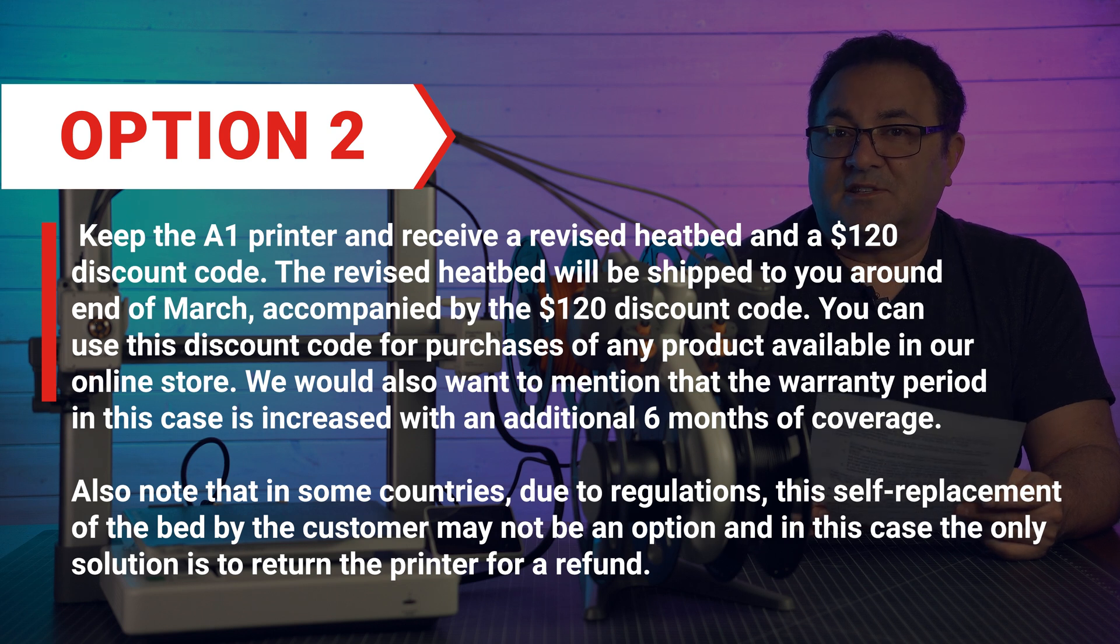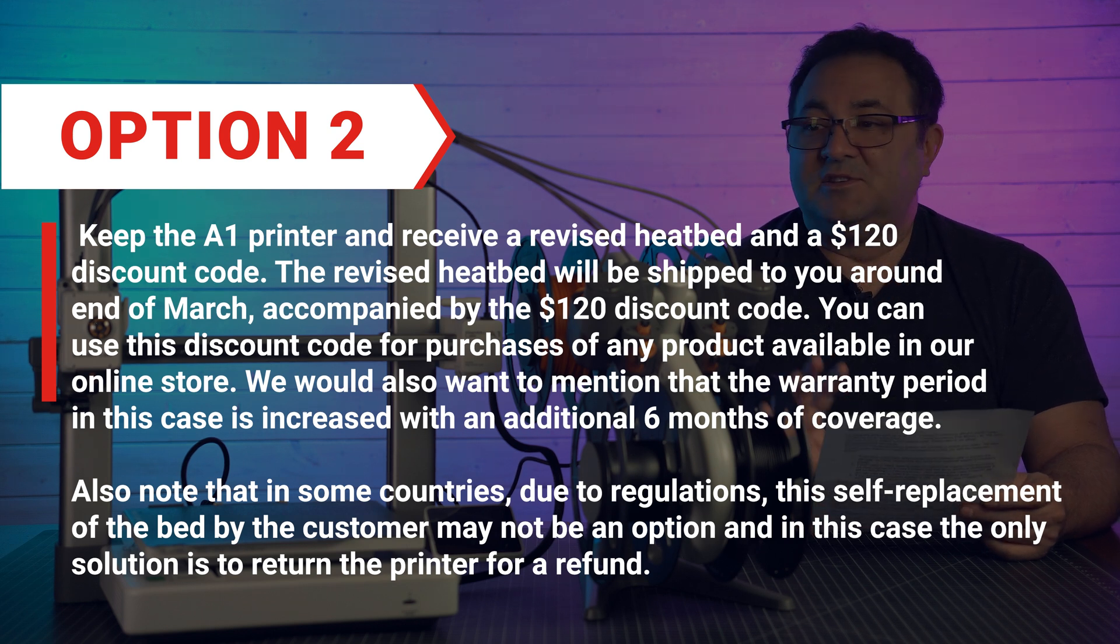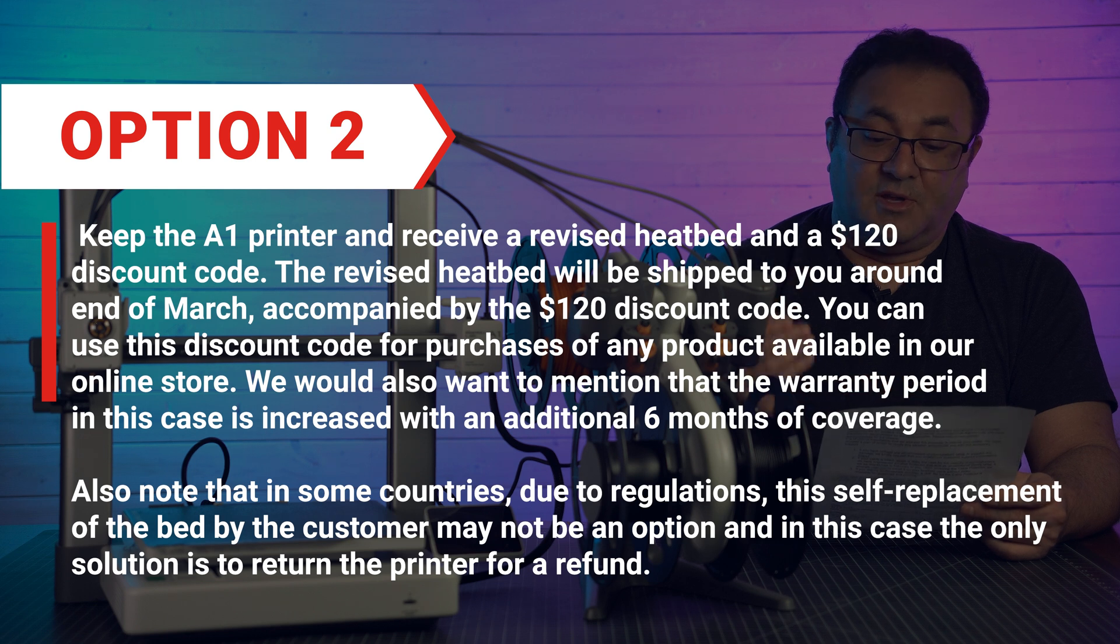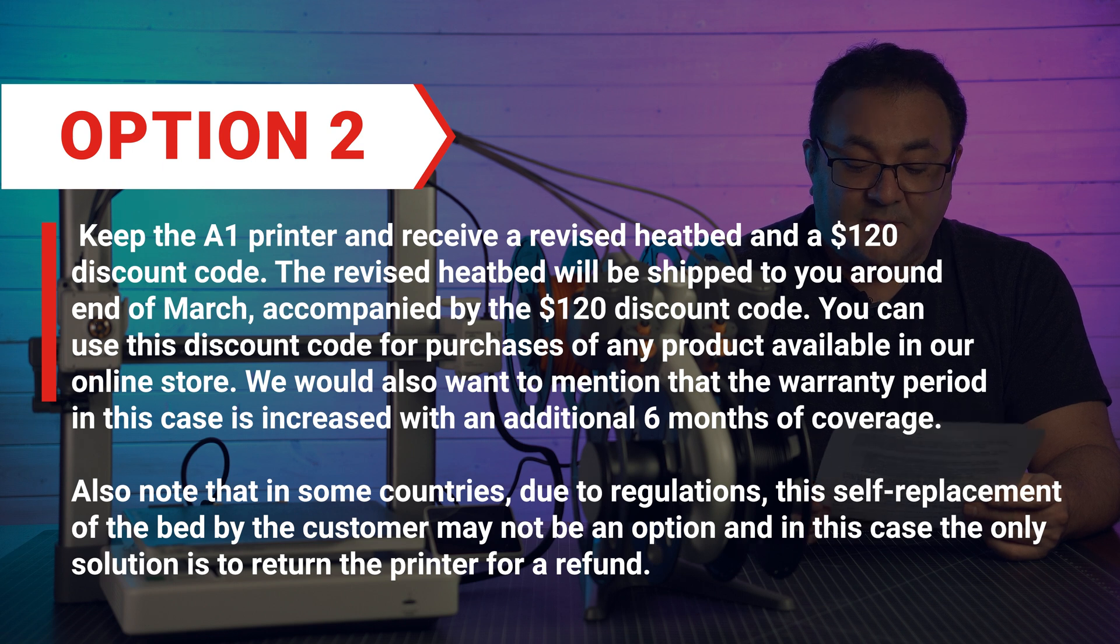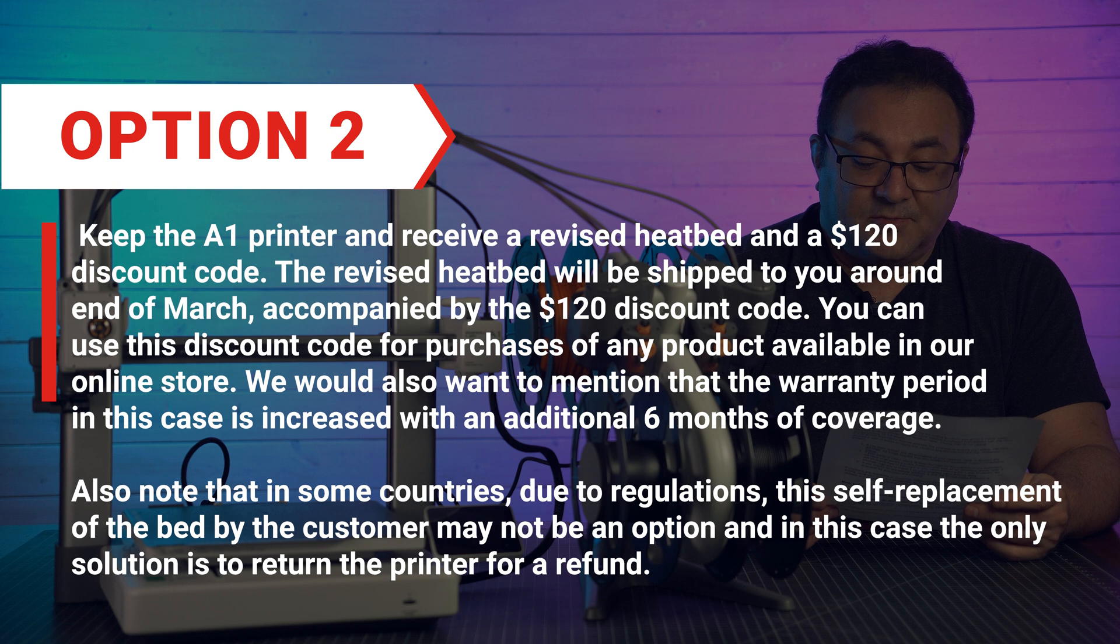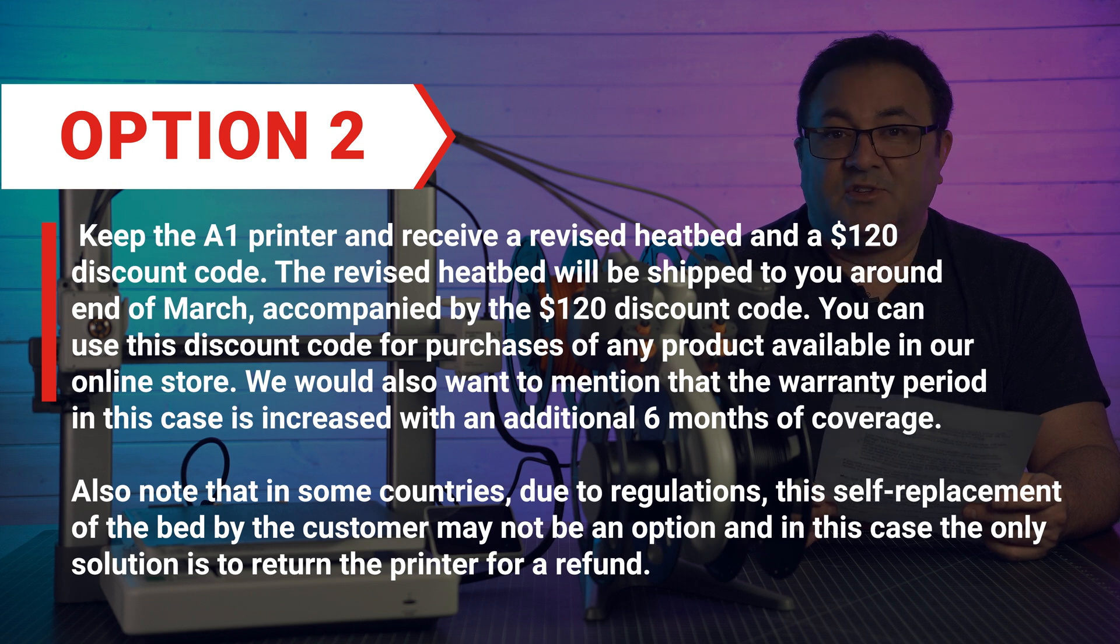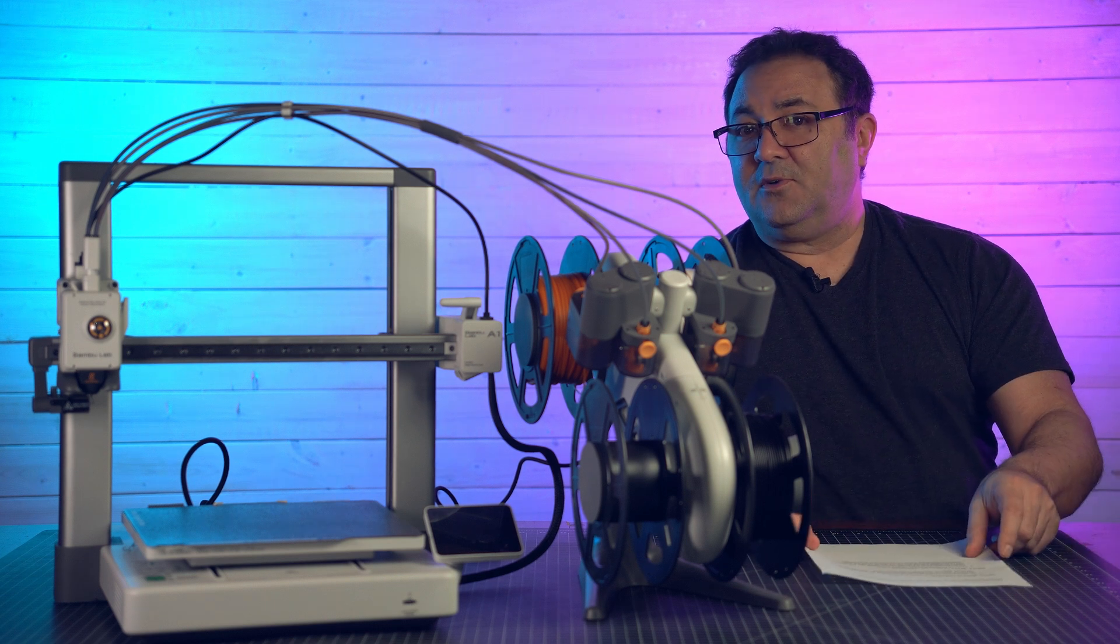So this one, since it uses that specific language, I'm assuming yes, this can be used for anything, whereas the other one can only be used for printers because it's all it mentions. It does not say anything. And then it says you will be notified by email when the new flatbed becomes available, expected around the end of March. Further guidance will be provided to facilitate replacement, and they actually give a link to the video for that.